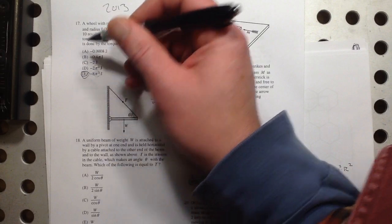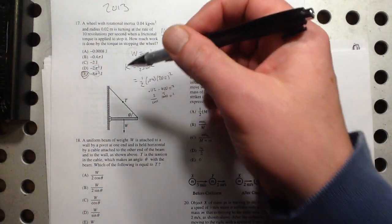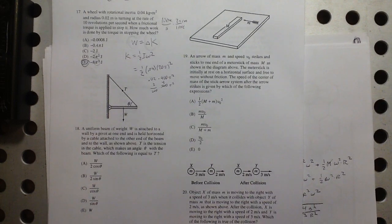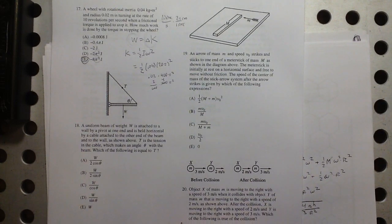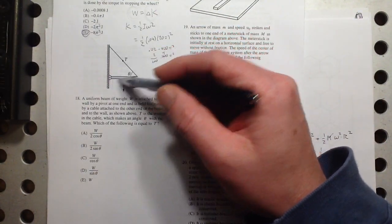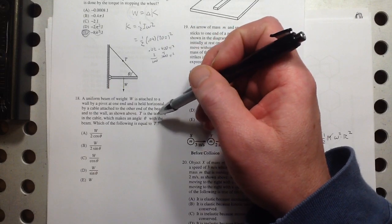And if you're wondering why the negative signs, well, the work that's done is taking all that kinetic energy away. So you're doing negative work there to take away that kinetic energy. 18. Uniform beam of weight w. This looks familiar. You did a lab kind of like this. And we saw lots of problems like this.